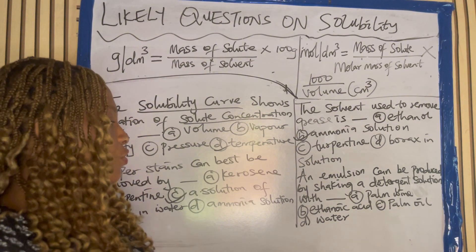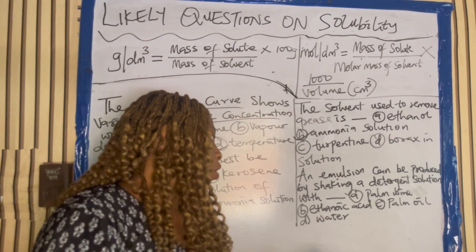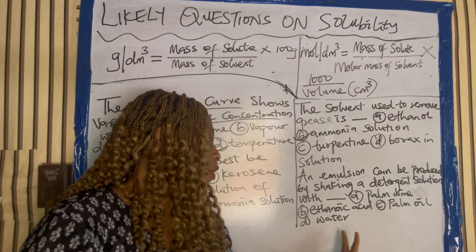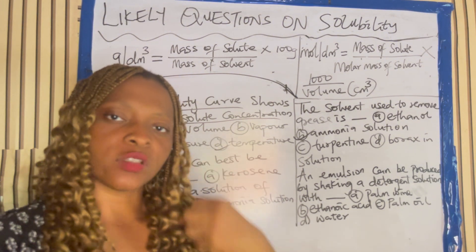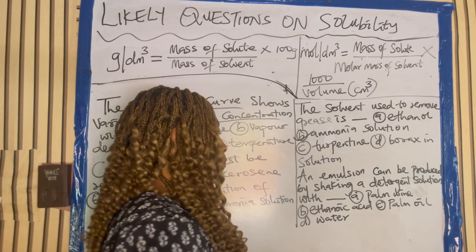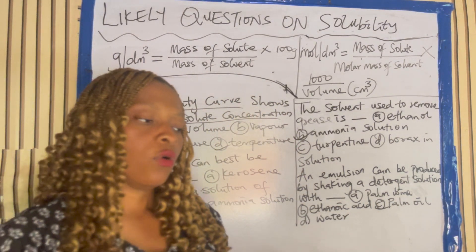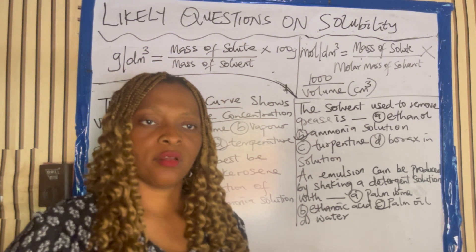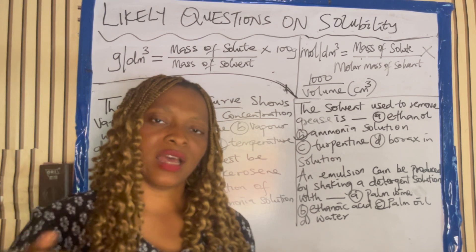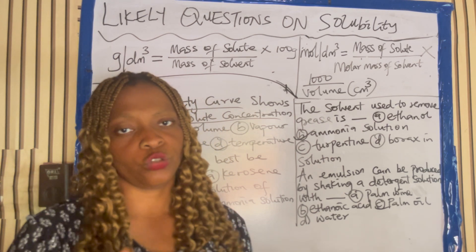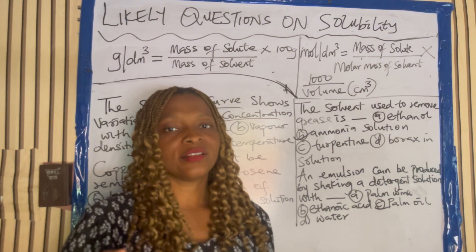An emulsion can be produced by shaking a detergent solution with what — palm oil or palm wine? When you shake detergent solution with palm oil, it gives you an emulsion. Have you tried washing a container of palm oil? When you pour water, add your detergent and shake it, you see that thing form — that is what we refer to as an emulsion. You can only get that from palm oil and detergent.